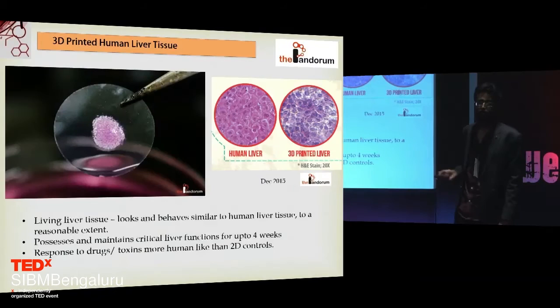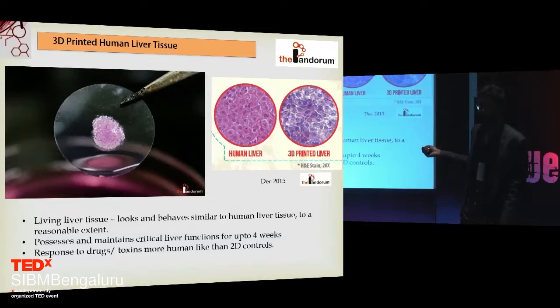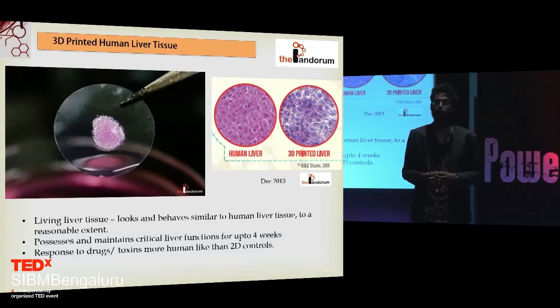We, as a startup called Pandorum Technologies, work on the design and manufacturing of artificial human tissues which are functional for a few weeks. Recently we developed liver tissue — this is how it looks like. It is a liver tissue because it possesses several critical liver functions like the production of albumin, cholesterol, urea, fibronectin, et cetera, over an extended period of time.